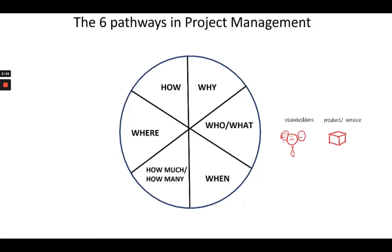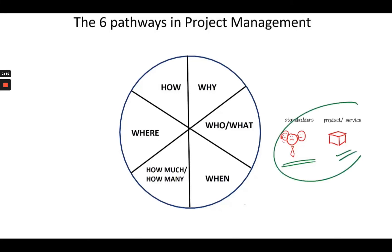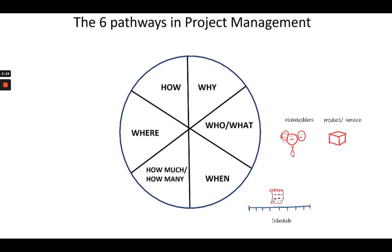Every project is owned and managed by people — some of them important and some not so important. These people who have a vested interest in the project are called stakeholders. Then there is the actual product or service that is going to be delivered as a result of the project. These two constitute the who and the what of the project. The next component is the dimension of time — projects are born at some point in time and die when they run out of time, and it is here that we talk about the schedule of the project.